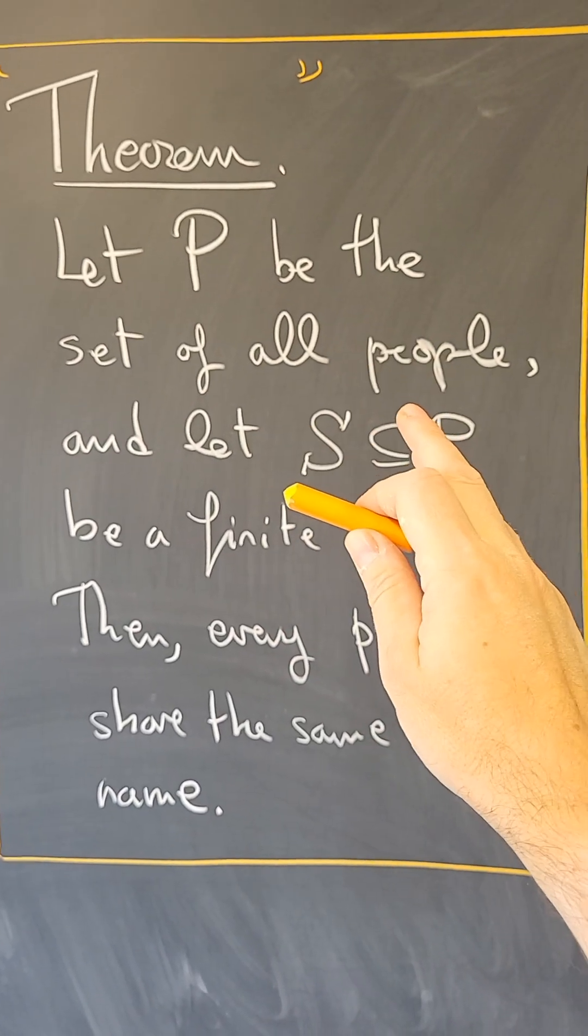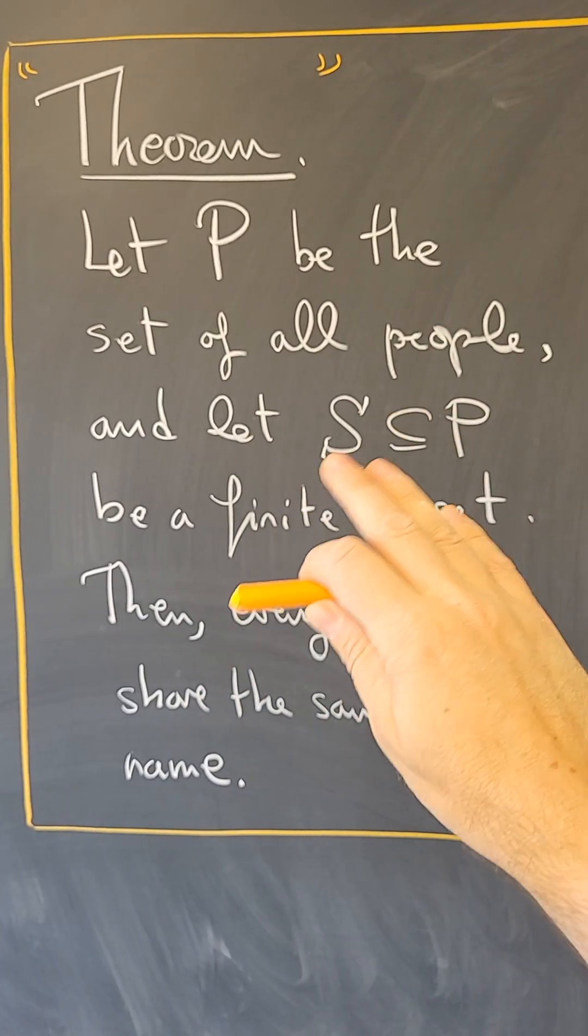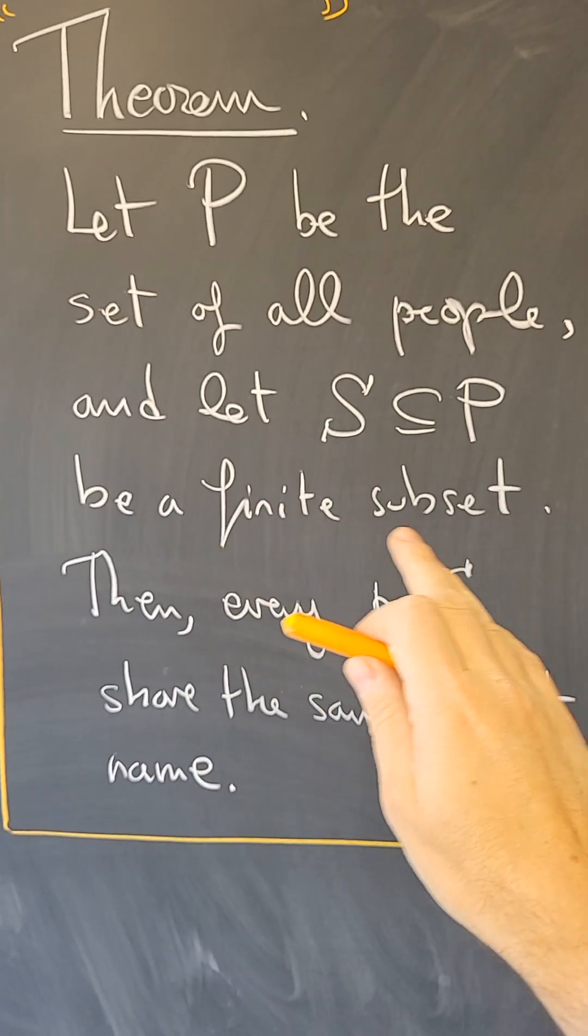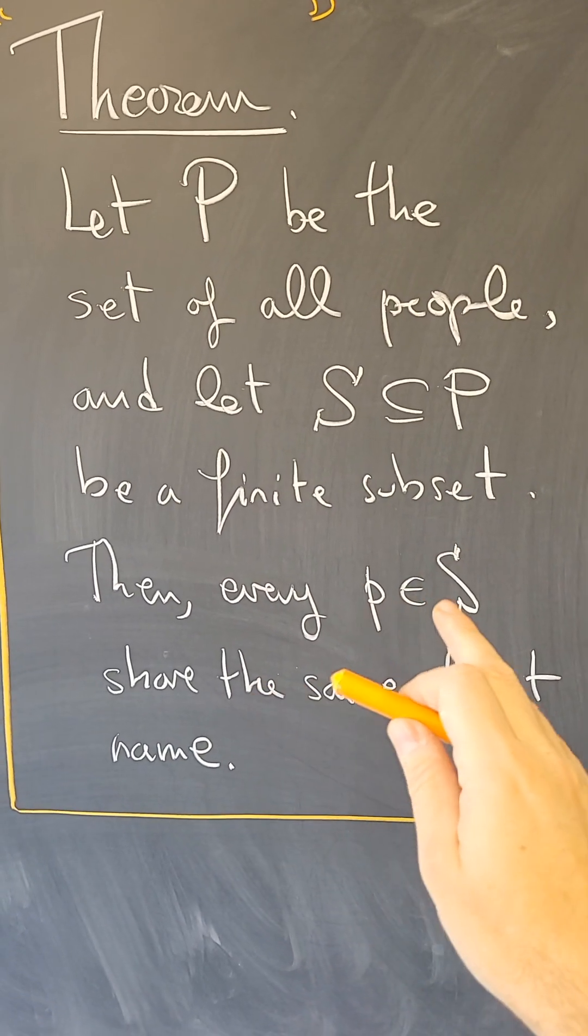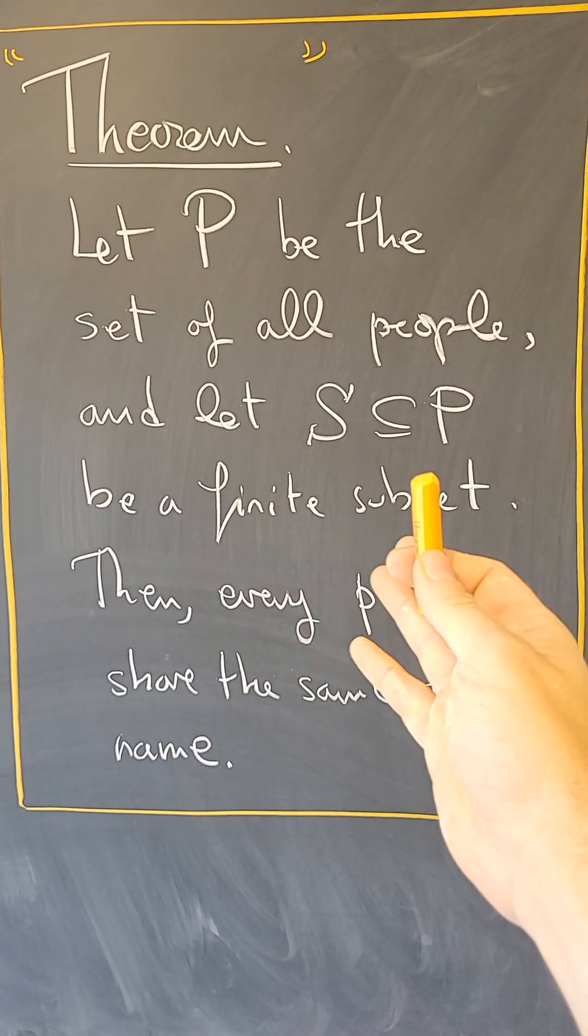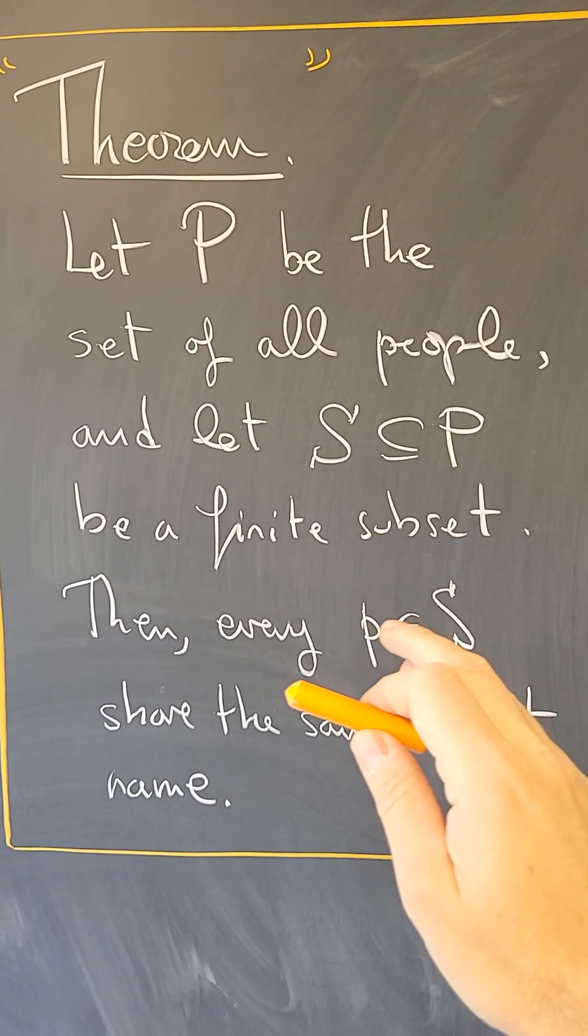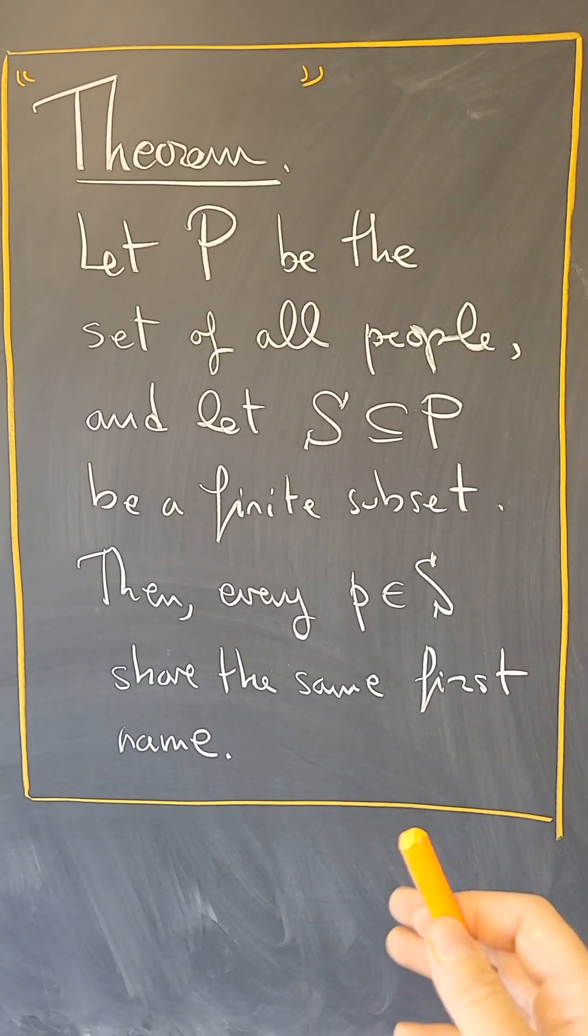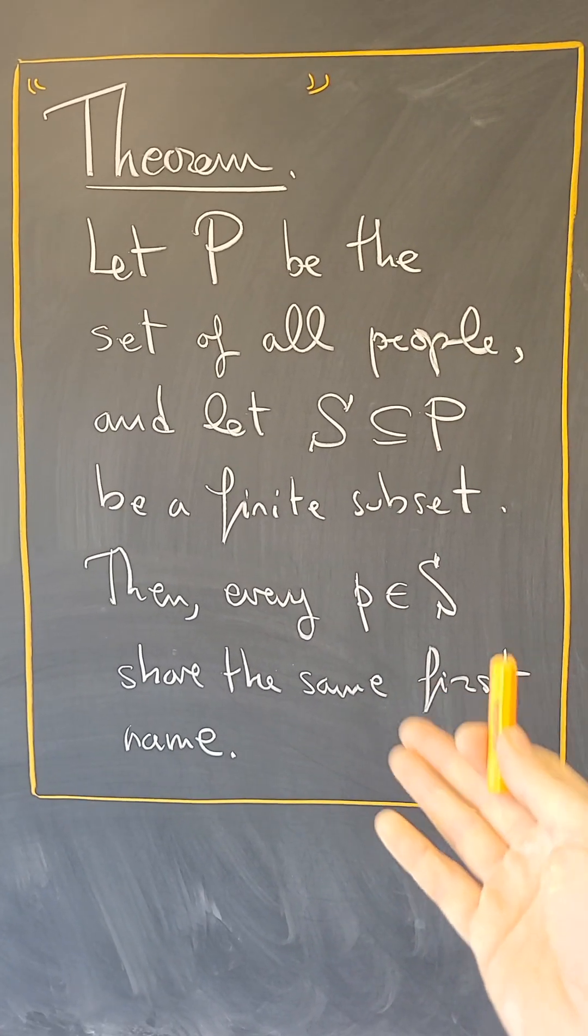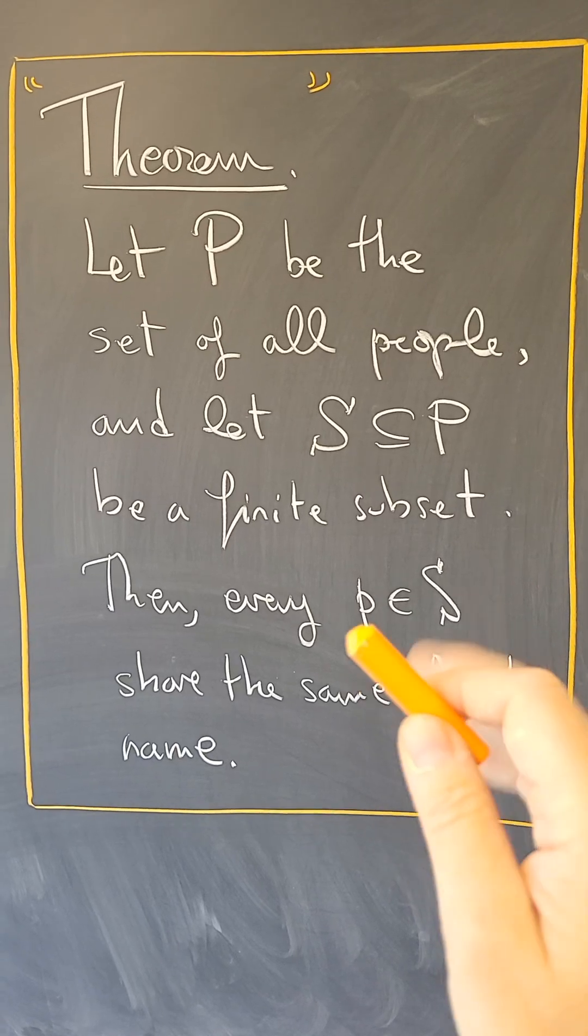Let P be the set of all people, dead or alive, on earth or elsewhere, all people, and let S be a finite subset of P. Then every person in that subset shares the same first name. This implies that every person in P has the same first name, but it is written in a more mathematical way. It's, of course, false, but let's see a proof.